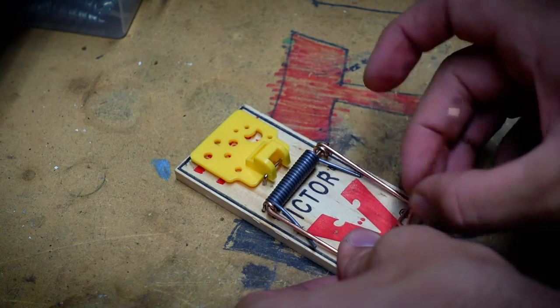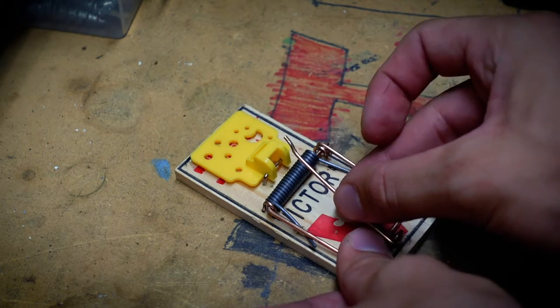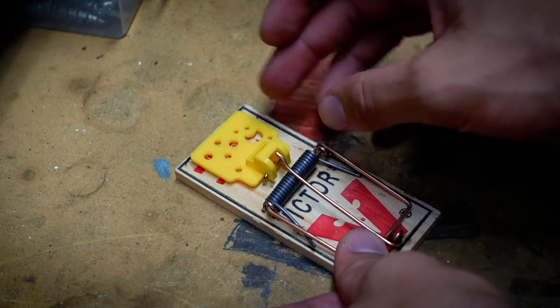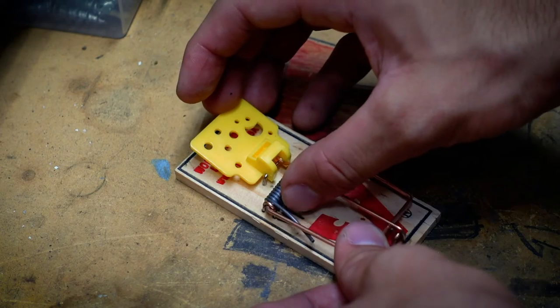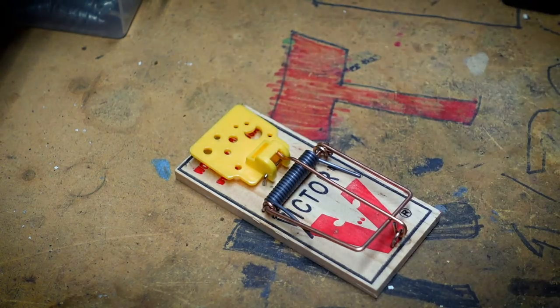We're going to pull it back, be careful because it's very loaded and it will hurt a little bit. Then we're going to get the arm bar, pull it over the kill bar, and insert it into the bait in this little slot right here. We're going to slowly release and there is your trap set.